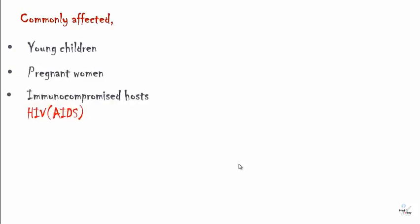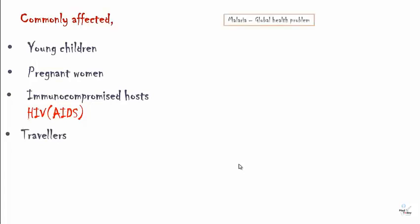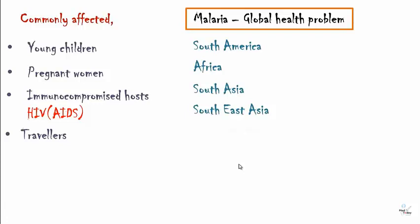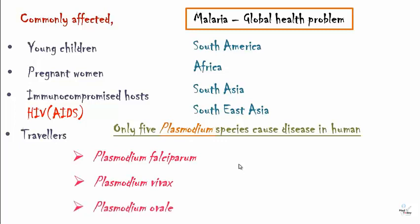Commonly affected groups include young children, pregnant women, immunocompromised hosts such as AIDS patients, and travelers. Malaria is a global health problem predominant in South America, Africa, South Asia, and Southeast Asia. Although many plasmodium species have been identified, only five cause disease in humans: Plasmodium falciparum, Plasmodium vivax, Plasmodium ovale, Plasmodium malariae, and Plasmodium knowlesi.